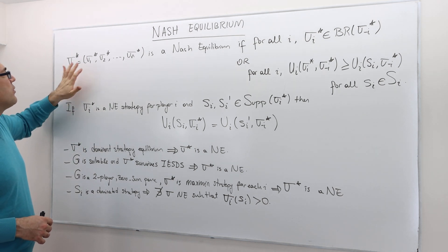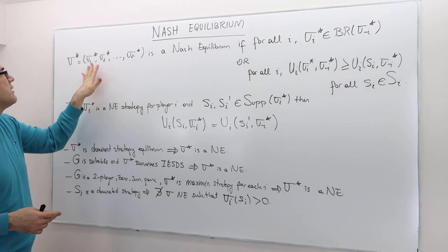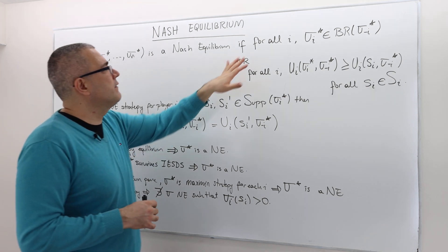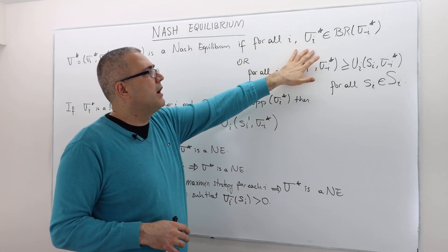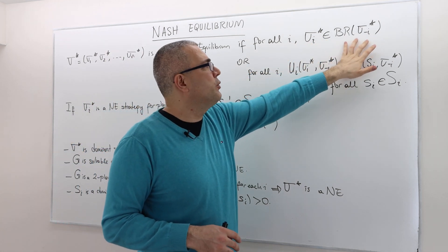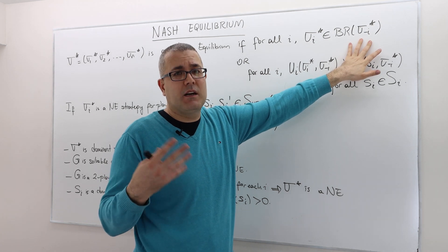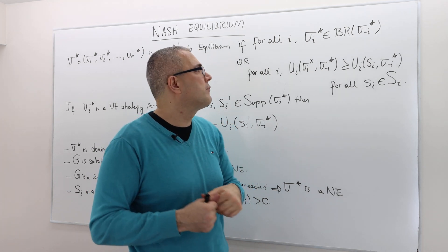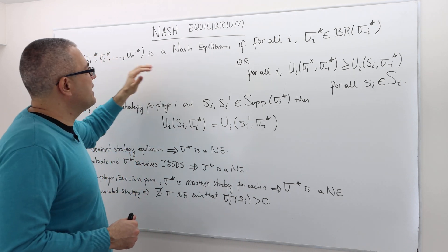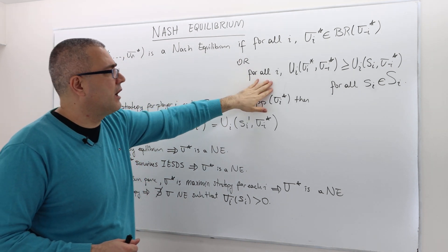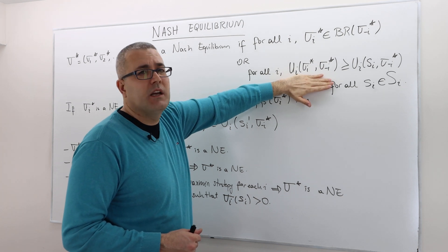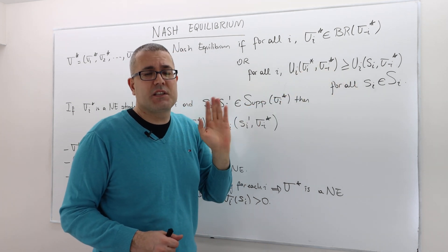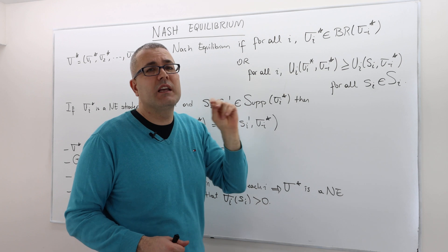A strategy profile sigma star, which consists of n mixed strategies sigma one star, sigma two star, up to sigma n star, is called a Nash equilibrium if and only if for every player i, sigma i star is the best response to the opponents' strategy sigma minus i star. So each player is best responding to his or her opponent's strategy. Alternatively, sigma star is a Nash equilibrium if and only if, for every player i, playing sigma i star is the best thing you can do, fixing that the others are playing sigma minus i star.